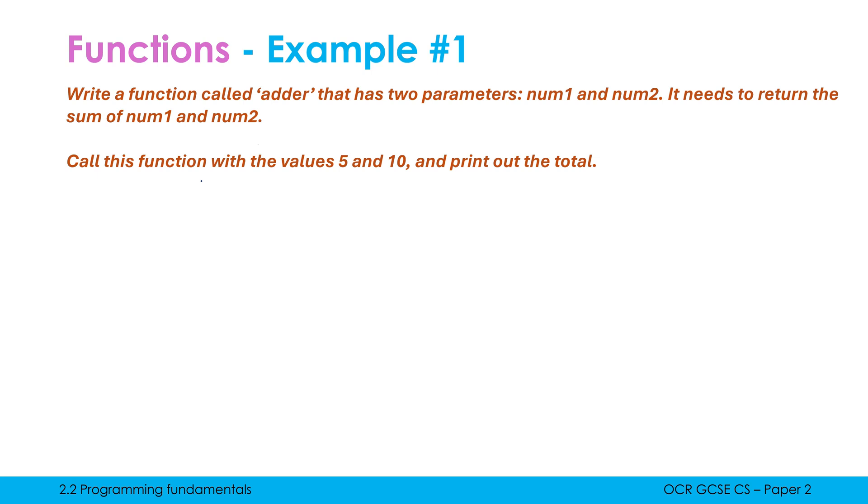Let's have a look at another couple of examples. We need to write a function called adder that has two parameters, num1 and num2. It needs to return the sum of num1 and num2. We're going to call this function with the values 5 and 10 and print out the total. We know it should be a function because it says function multiple times, but also if it says anything about returning, it's screaming at you that it is a function, not a procedure. So let's do this in the URL. We write the word function first of all. In Python it would be def, but it's function in URL. I've got to give this a name - it's told me the name should be adder.